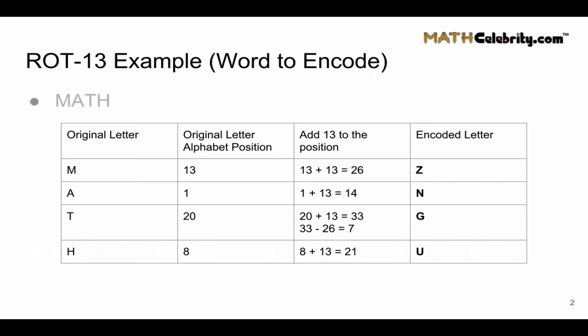Let's walk through an example. We want to take the word math and encrypt it using ROT13. I've laid out this handy grid for you. First we take our original letter and determine its position. So A is 1, M is 13, T is position 20, H is position 8.